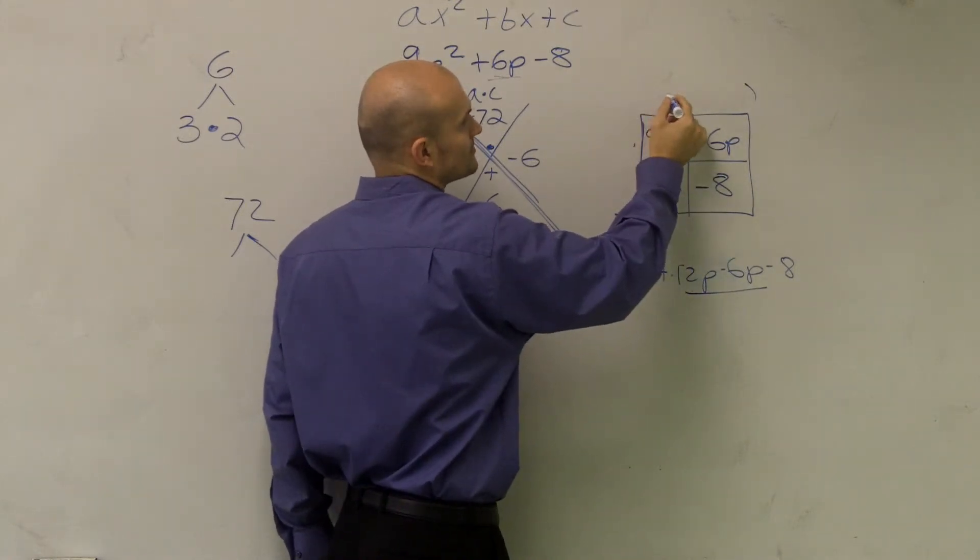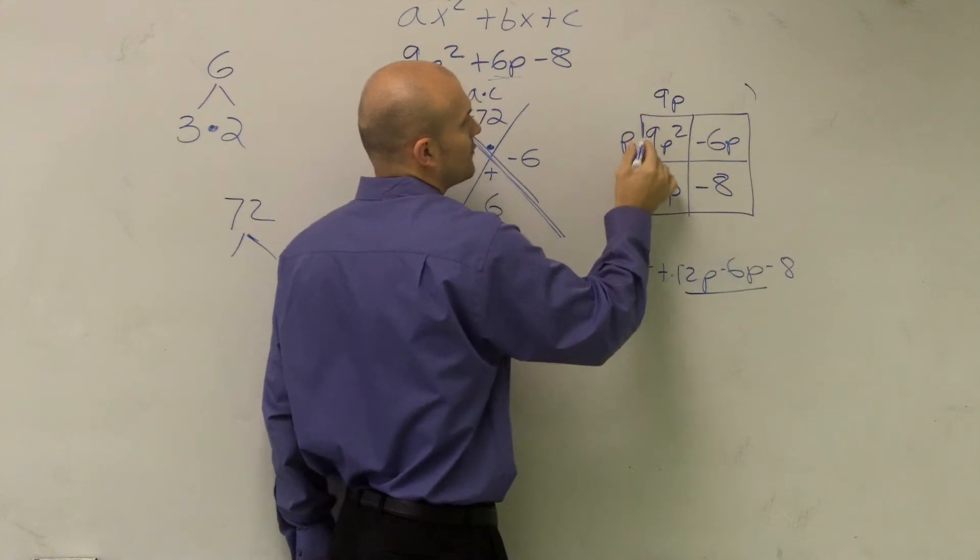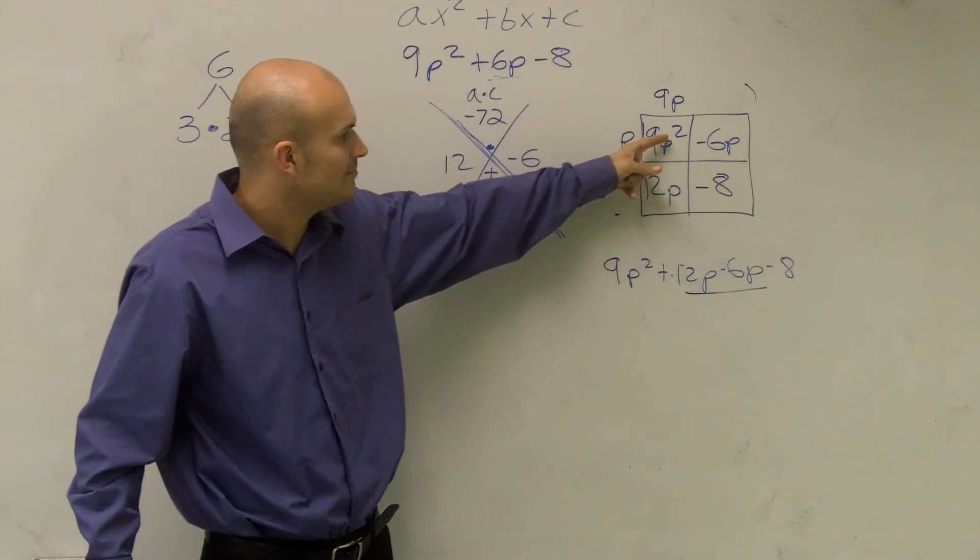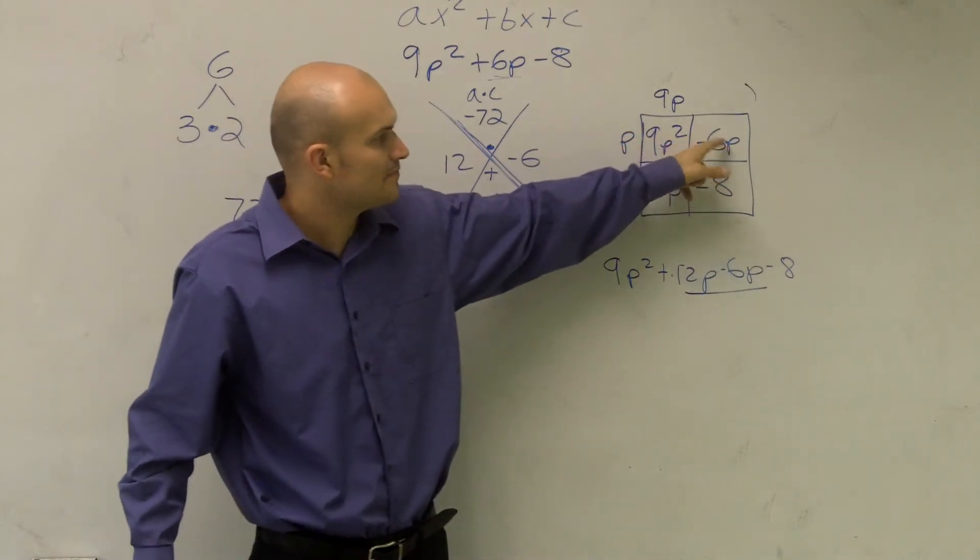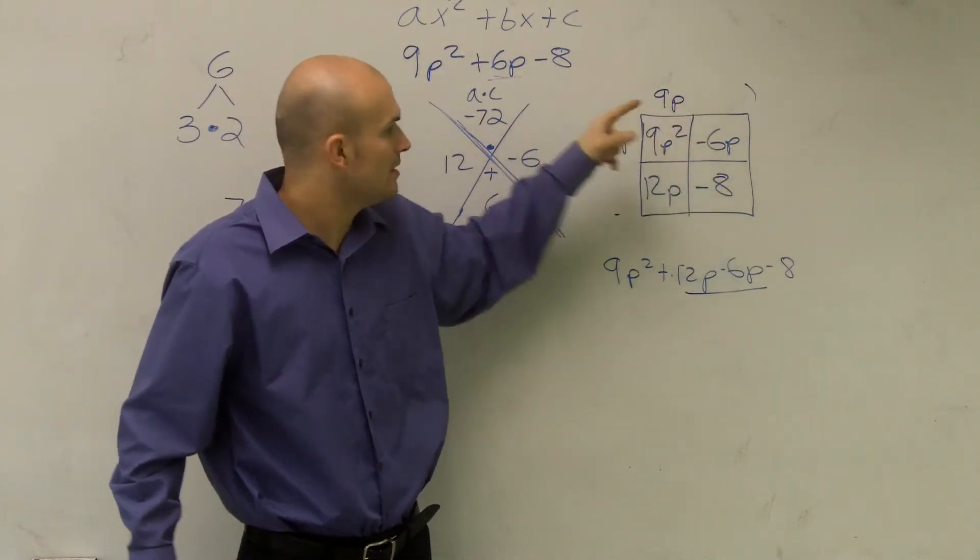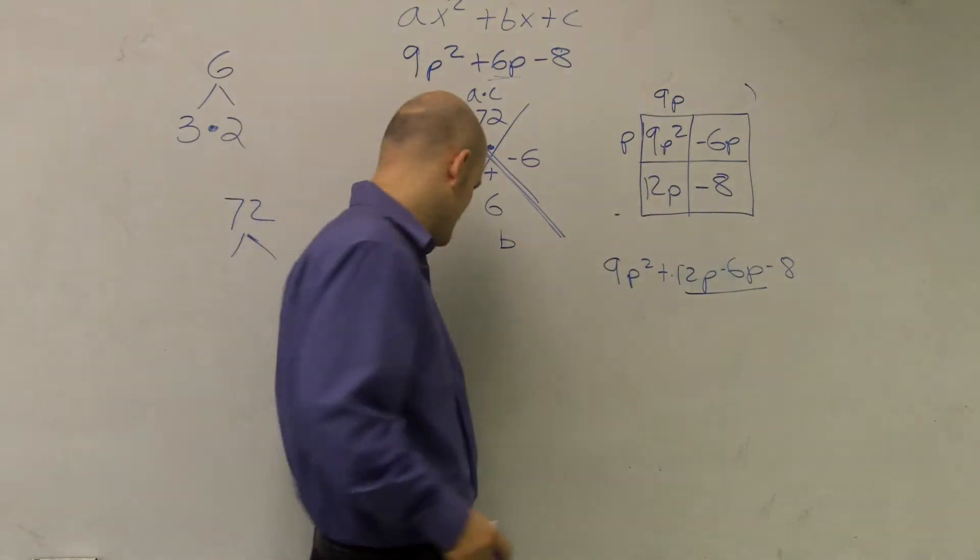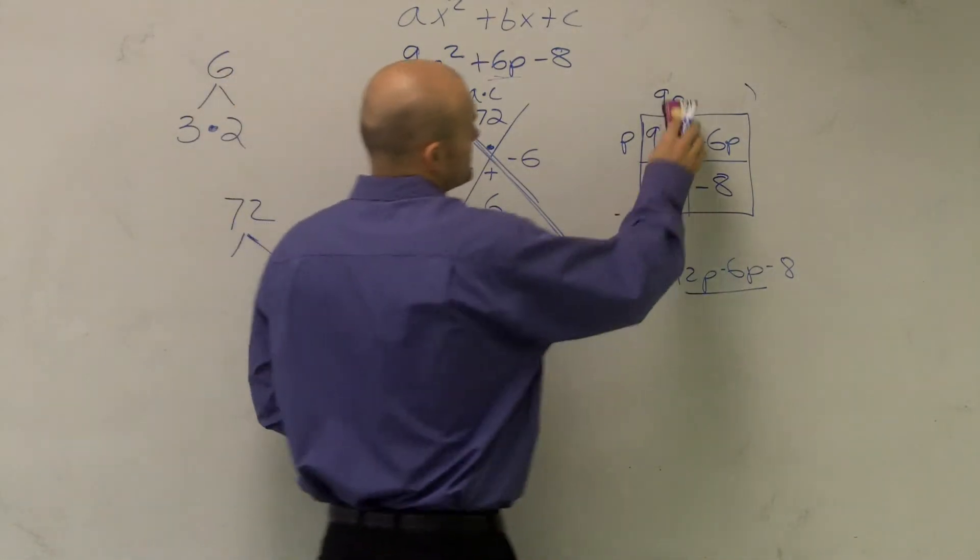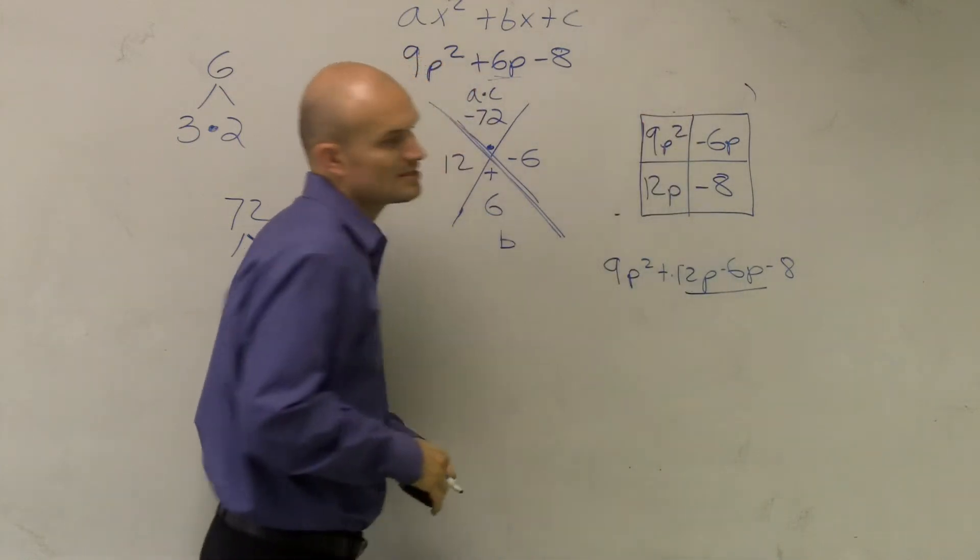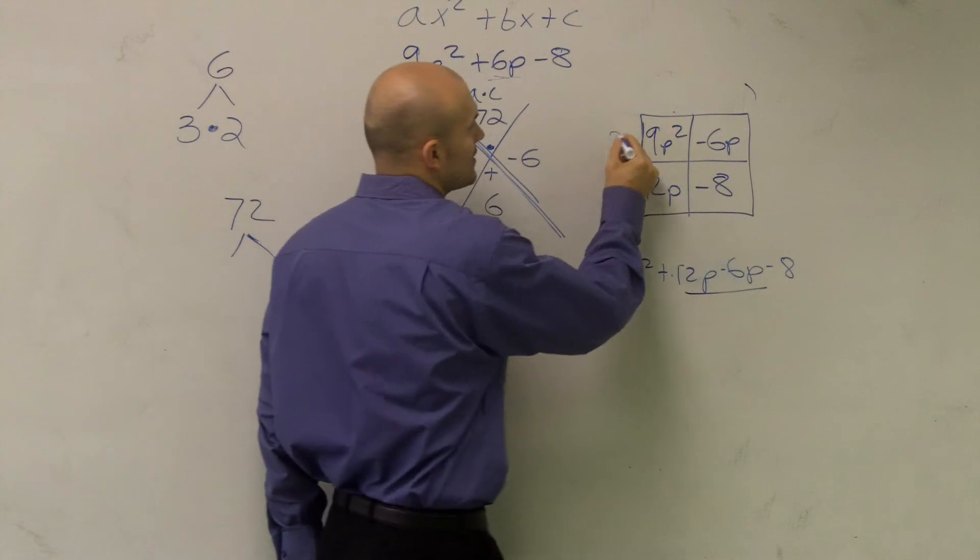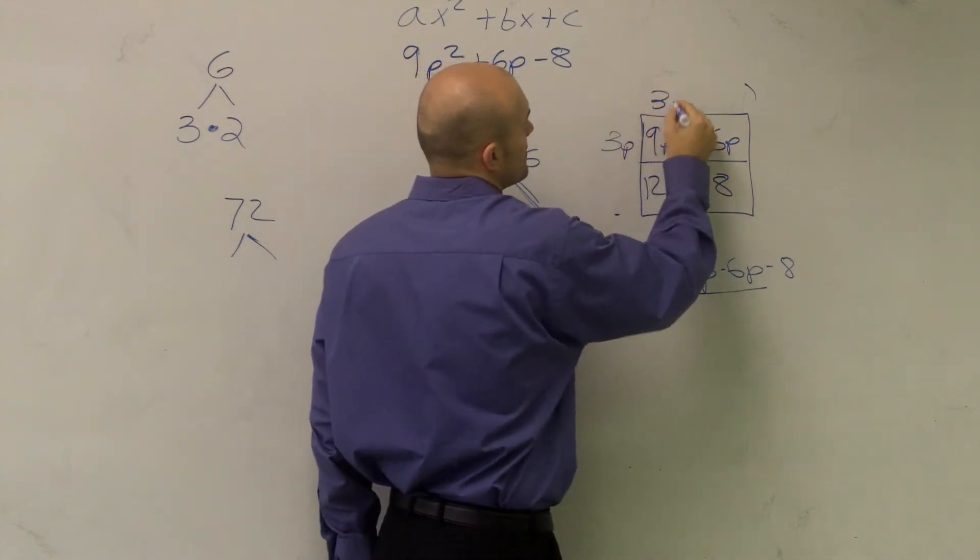How about over here? How about if I put a 9p over here and a p over here? 9p times p, again, still gives me 9p². But, alright, p times a negative 6p. I could write a negative 6 up there. But 9p times what gives you 12p? Again, not an even integer. So what I'm going to have to do is we can't use 9 and 1 as my two numbers to multiply by 9. I'm now going to have to use 3p times 3p.